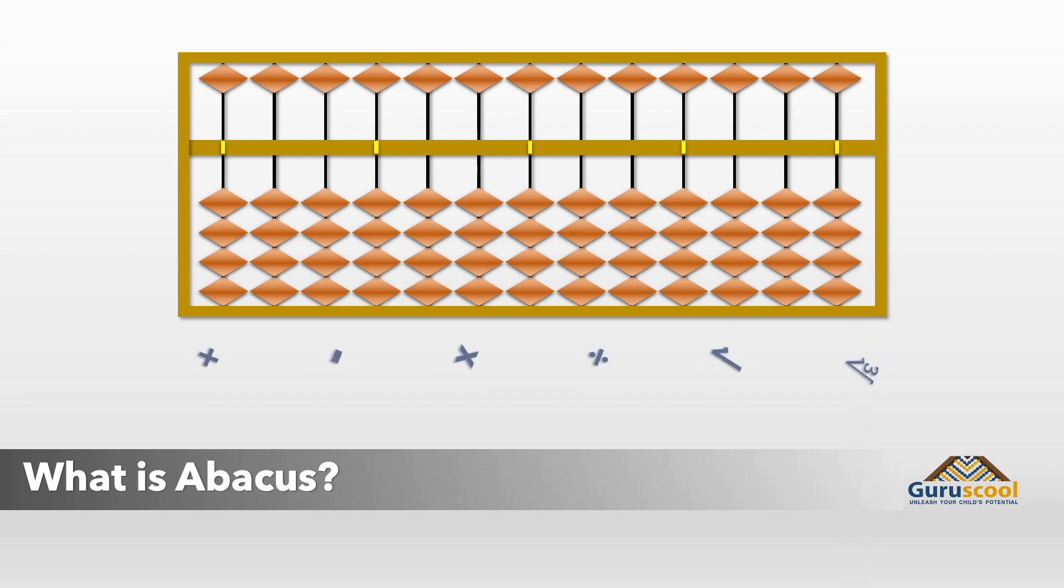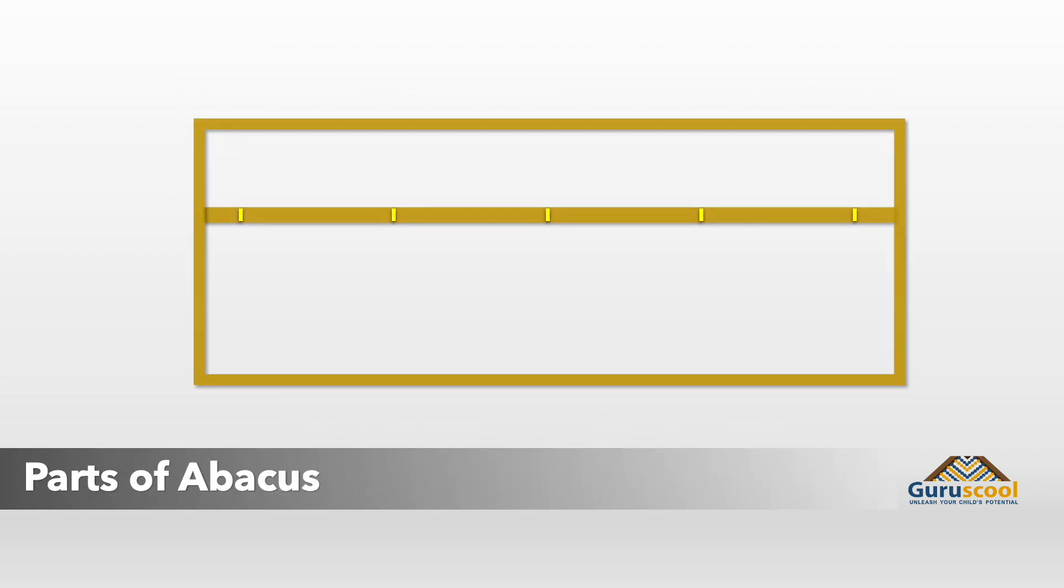The abacus consists of columns of beads which represent the place value of a number. Different combinations of beads represent different numbers, even up to the billionth place. Let us learn more about abacus.